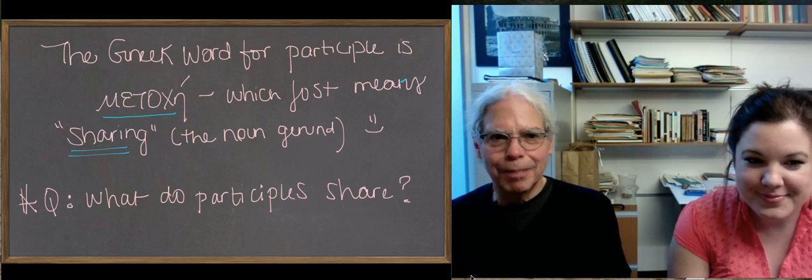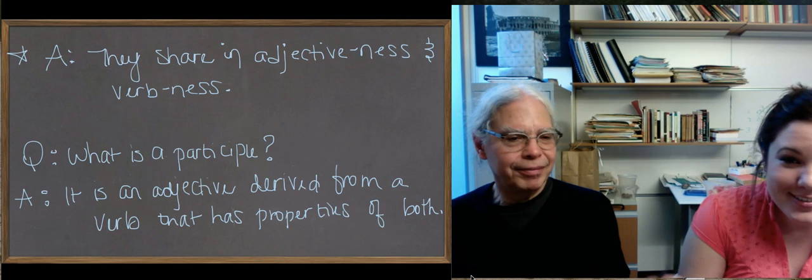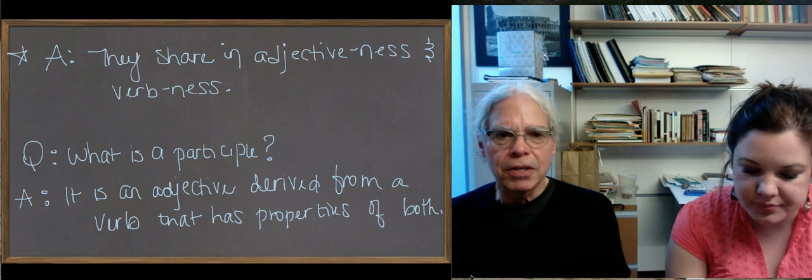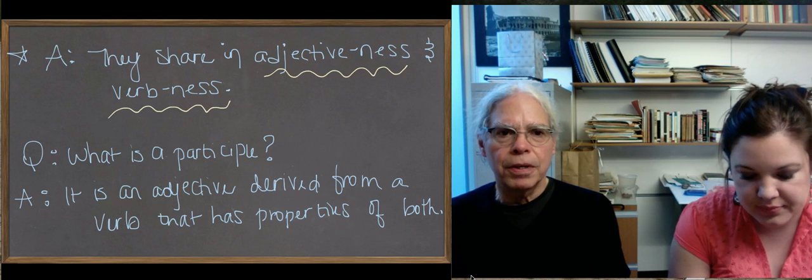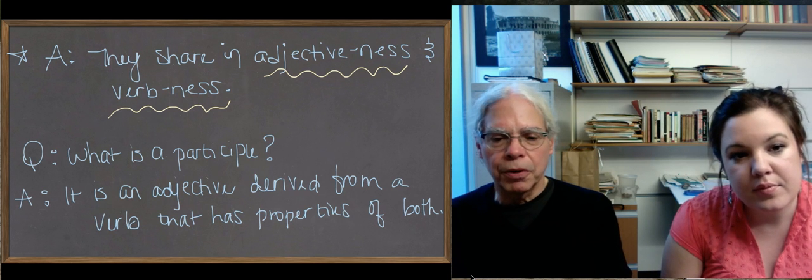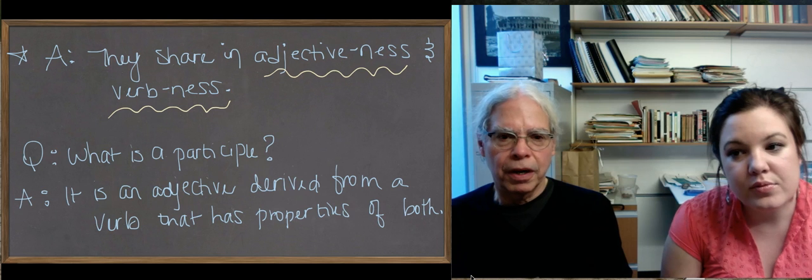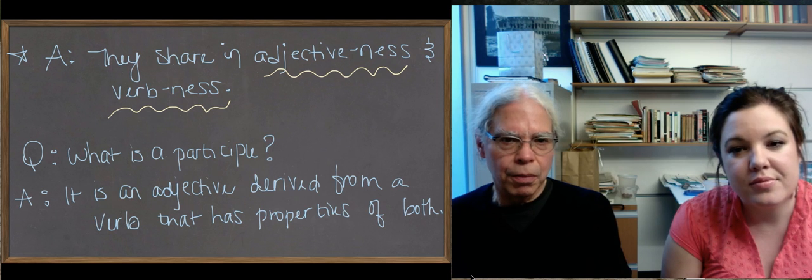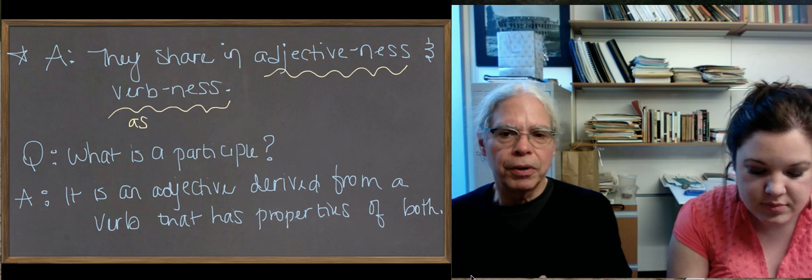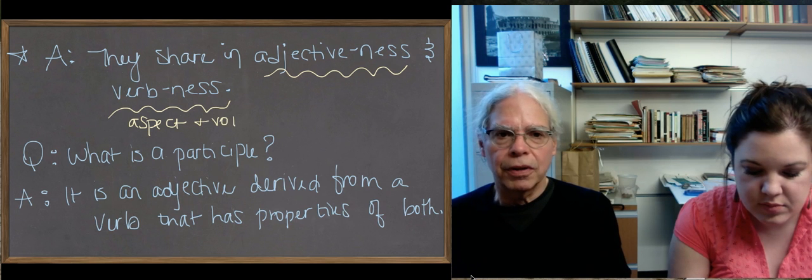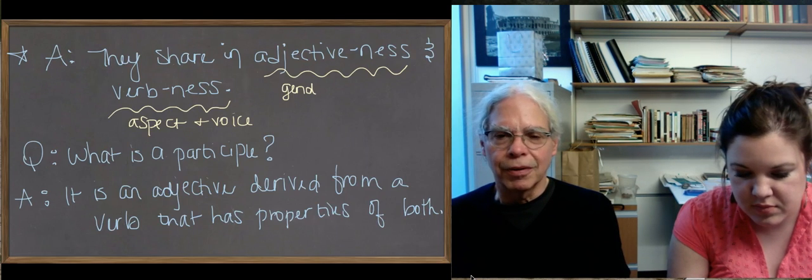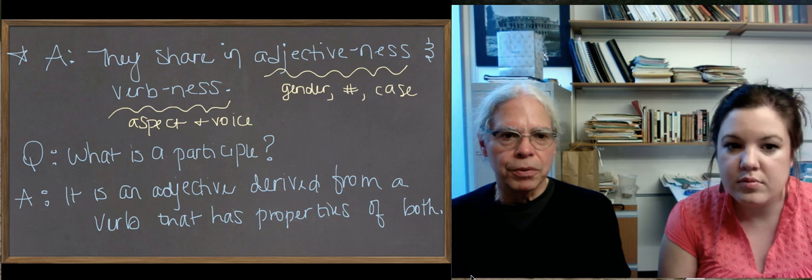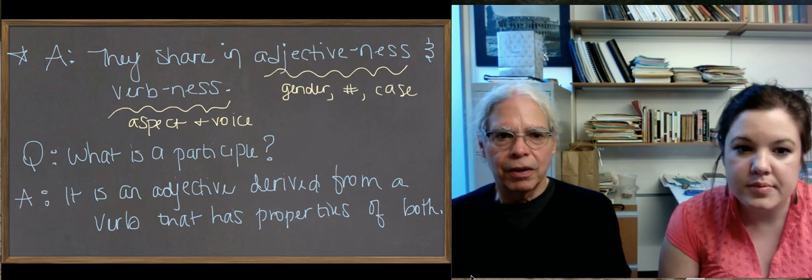And the answer is, ta-dum, there we go. Here's what they share in. The two things they share in are adjectiveness and verbness. And these are properties that are crucial to them. So when we come to the forms, you will see that Greek participles have the aspect and the voice of verb forms, but they have gender, number, and case like adjectives. So it's literally the case that they're like centaurs. They're composed of two different things, adjectives and verbs.